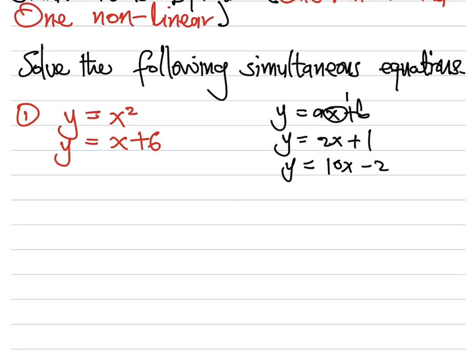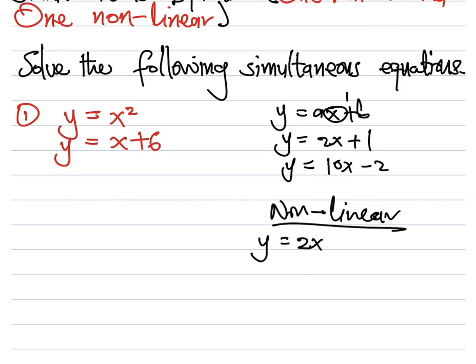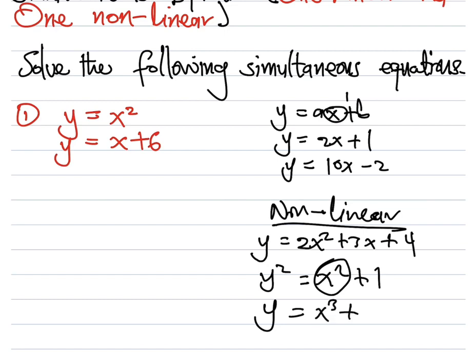When we are talking about non-linear, it means that the highest power of x could be more than 1. For example, we could have 2x² + 3x + 4, or y² = x² + 1. You could even have a cubic function. So as long as the highest power of the x term is more than 1, we are talking about a non-linear.